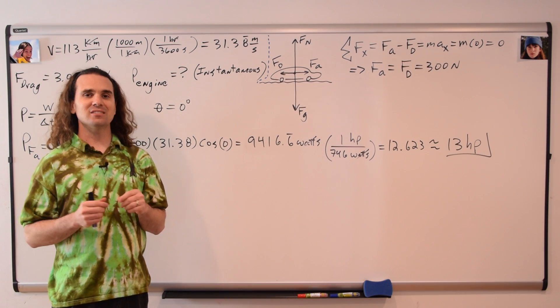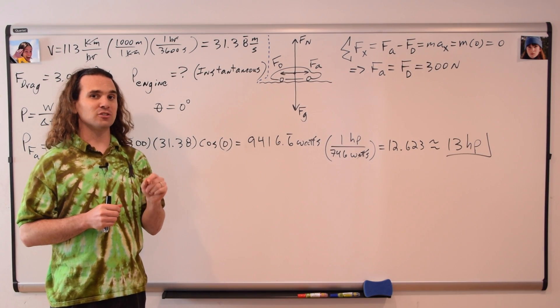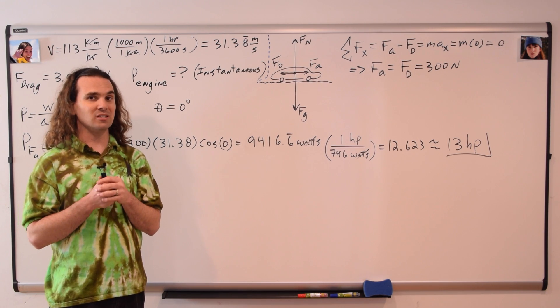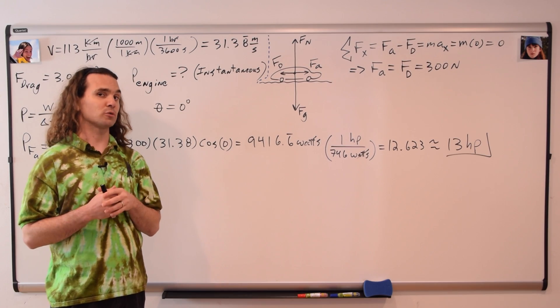That is correct. The instantaneous power delivered by the engine to the car while the car is moving at a constant velocity of 113 kilometers per hour is roughly 13 horsepower.